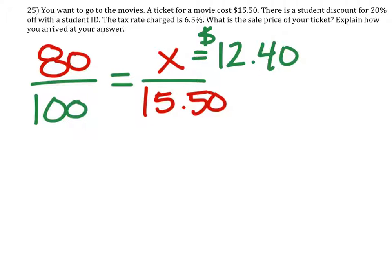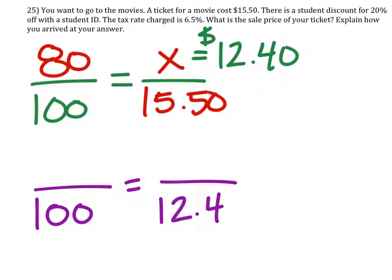But then they're going to have to charge you tax, so we've got a new proportion where $12.40 is the full value. They're going to charge you 106.5% of the value because it's a 6.5% tax. We'll solve for X.